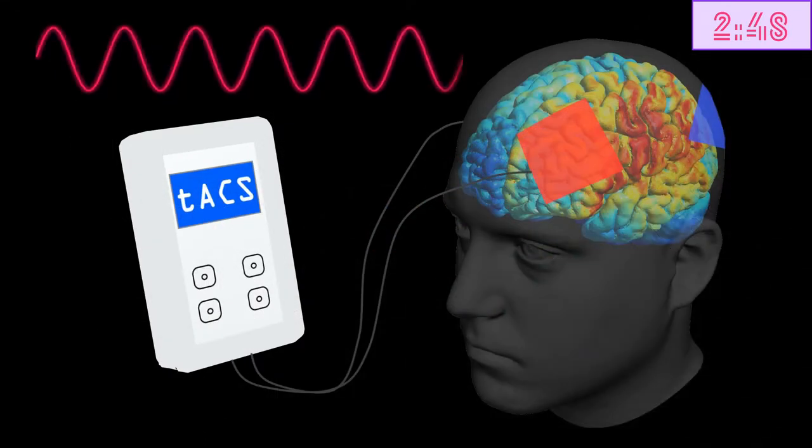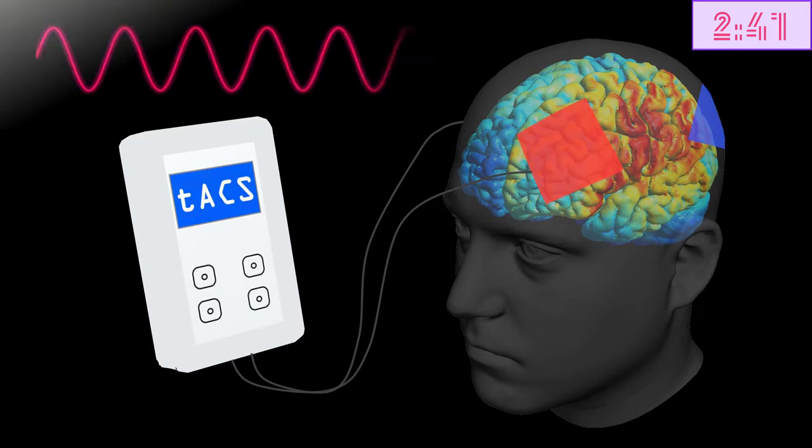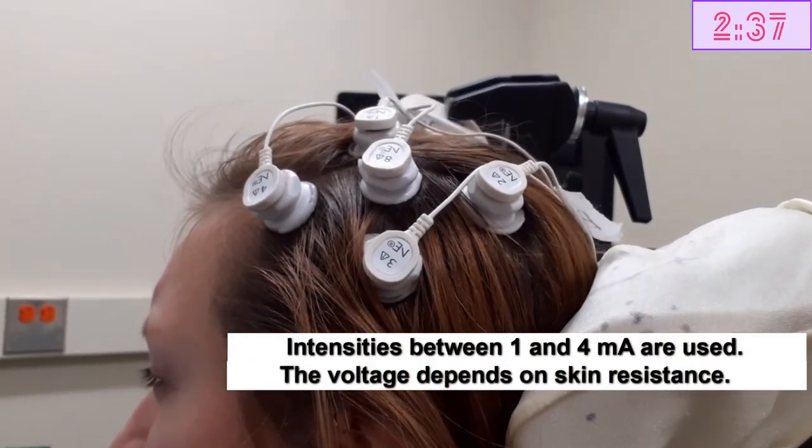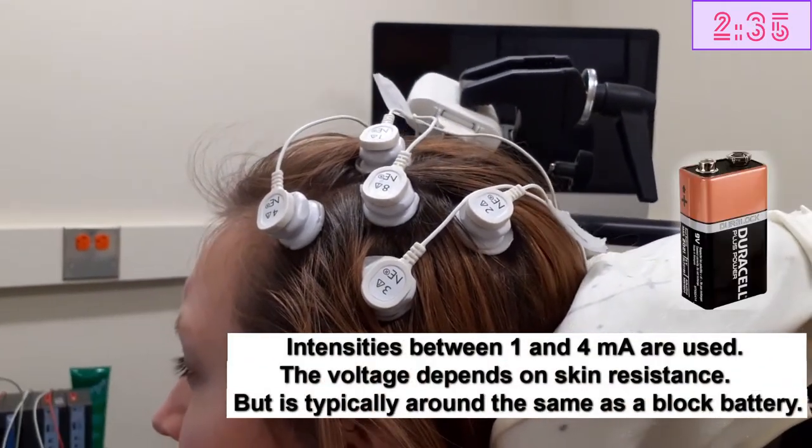As the name suggests, TACS applies alternating currents to the brain. However, these currents are relatively weak, typically smaller than 2mA. So despite some occasional tingling feeling, TACS is a safe method.